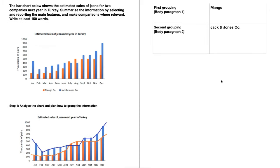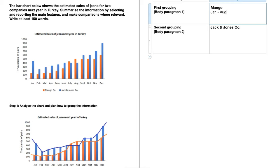I'm going to organize the information into two groups. The first grouping — my first body paragraph — will be Mango, shown in orange. The second grouping — my second body paragraph — will be Jack and Jones, shown in blue. I'll make notes of things that stand out. Your outline does not have to be perfect; no one is going to see it. This is just for you to base your writing off of.